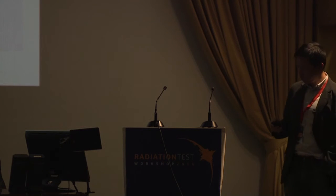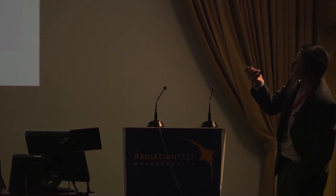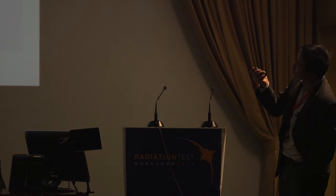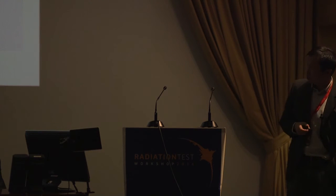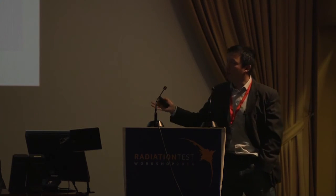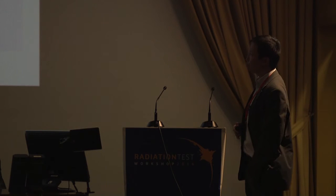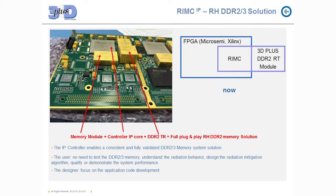This is our solution. At the end, you can see that on the customer board we have the 72-bit DDR2 module, the IP core integrated into the FPGA, and also a DDR2 termination regulator — so it is a full plug-and-play, consistent, and fully validated DDR2 memory system solution. The user has no need to test the DDR2 memory, no need to understand the radiation behavior, no need to design the radiation mitigation, and no need to qualify or demonstrate system performance — all this has been done.